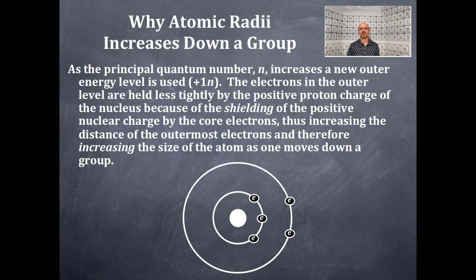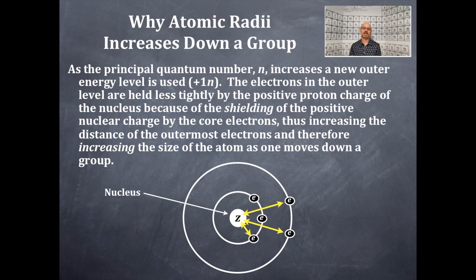Take a look at the diagram here. The nucleus has the protons — that is the Z number — and they are positively charged. I have some electrons in two different orbitals here. These yellow arrows are designating attractive forces: the electrons, which are negative, are attracted to the positive Z protons in the nucleus.